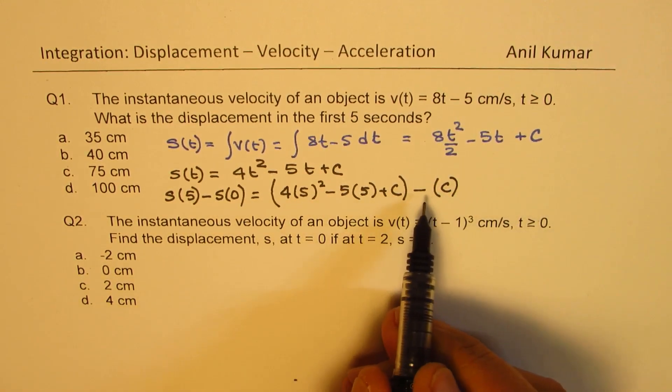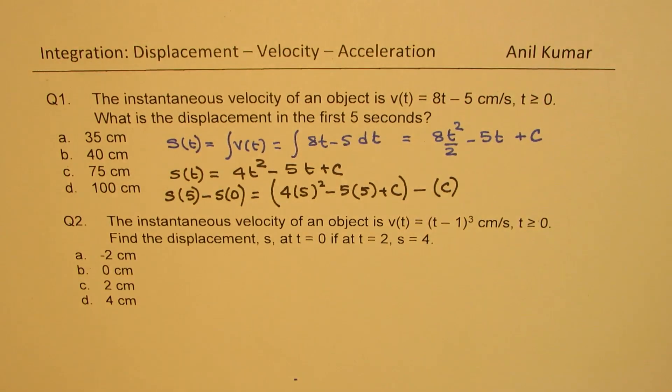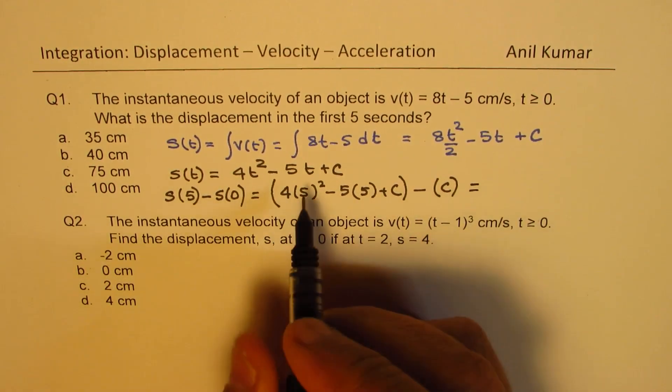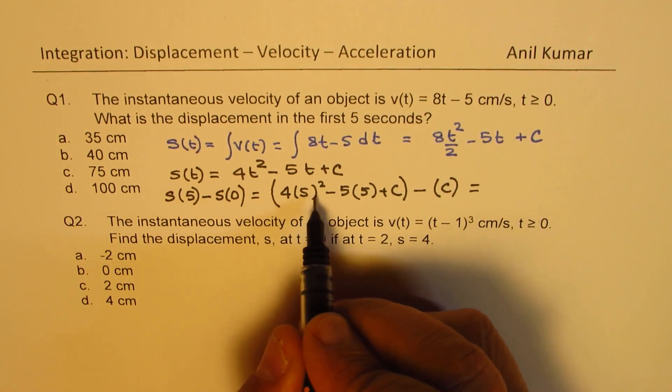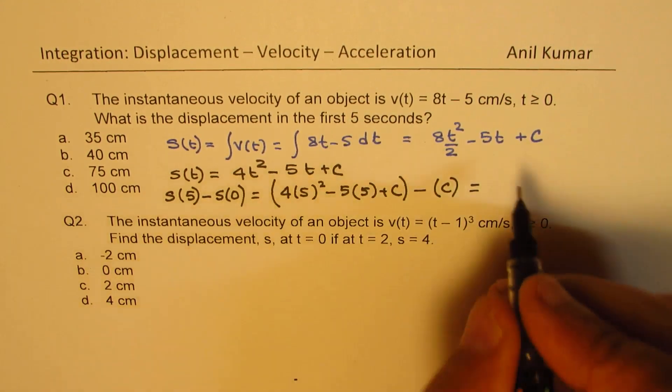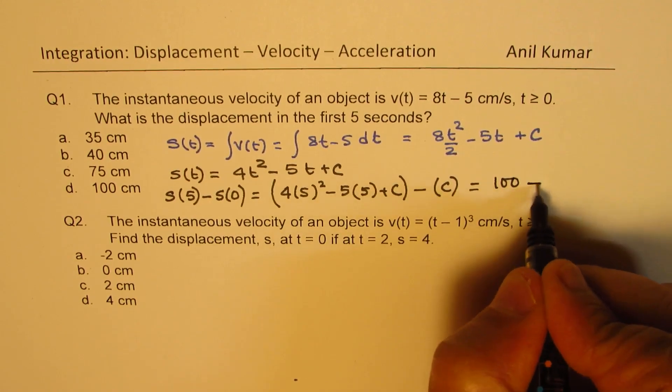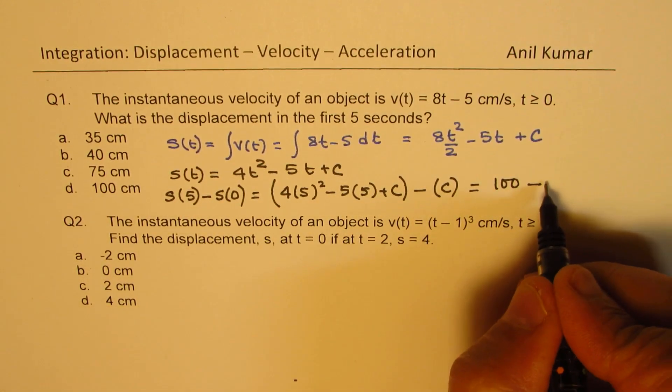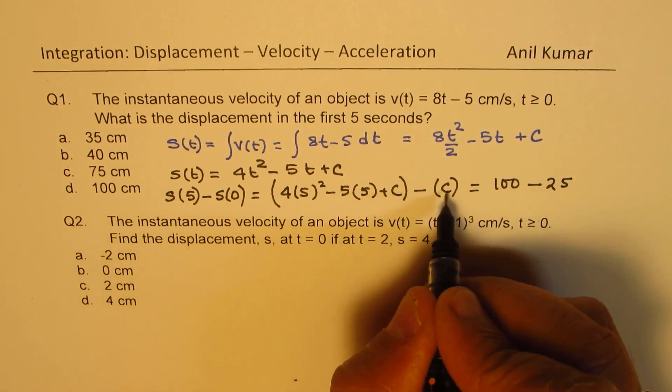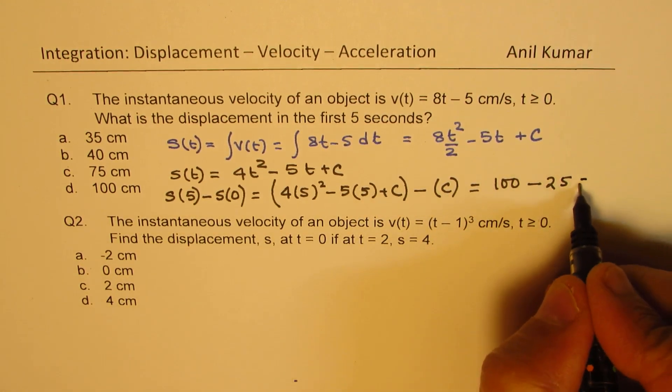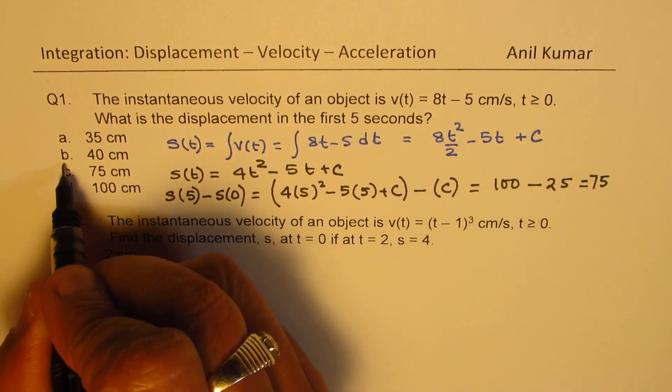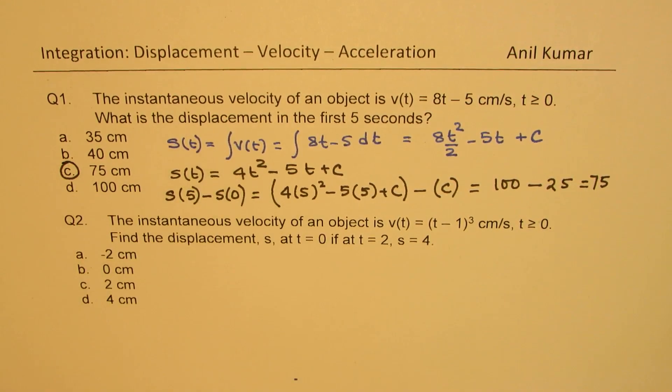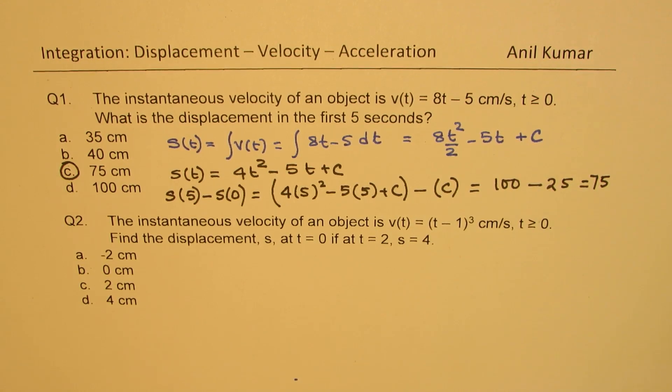As you can see here, c and c will cancel. So what remains is 4 times 5 squared is 25 times 4 is 100 minus 5 times 5 is 25. And that c minus c is 0. So we are left with a value which is 75. So the answer is 75 centimeters. So that is how we are going to find the solution of this one.